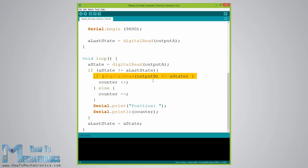If the output B state differs from the output A state, the counter will be increased by one, else it will be decreased. At the end, after printing the results on the serial monitor, we need to update the A last state variable with the A state variable.